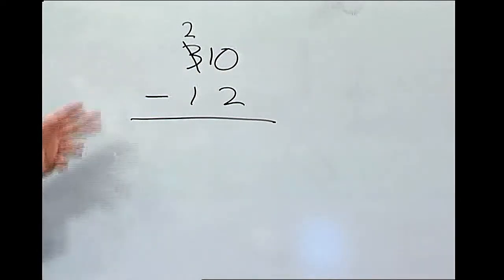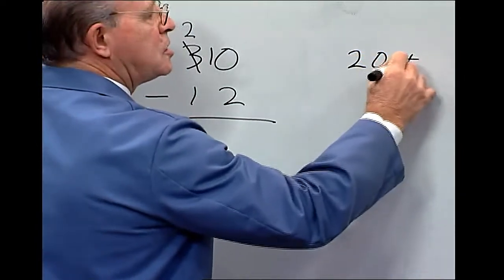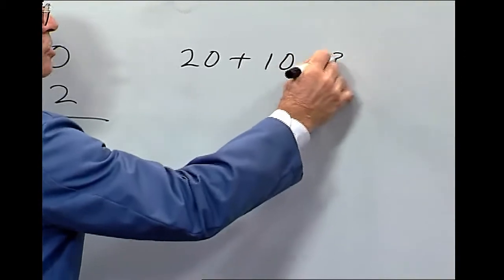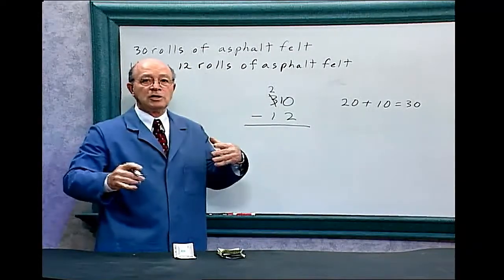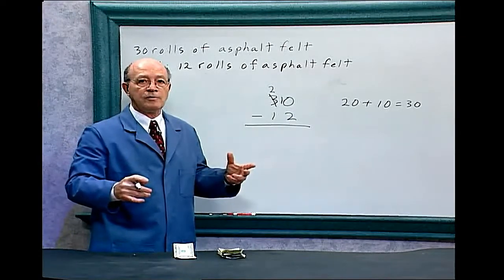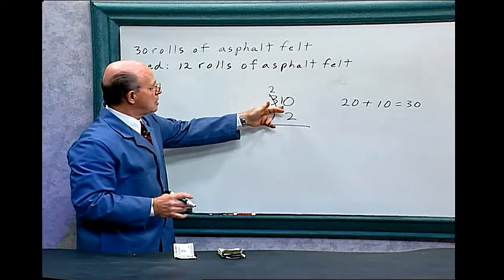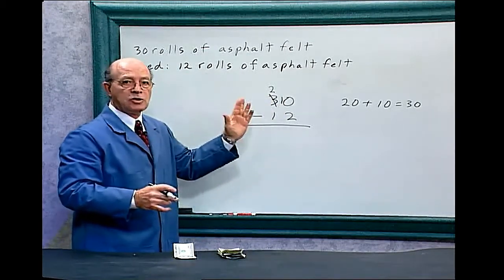So now what we have here is really, you have a 20 plus a 10, and that equals 30. So when you're borrowing, you're not really changing a number. You're just borrowing here. The 10 ones equals one 10. So that's what you're doing.